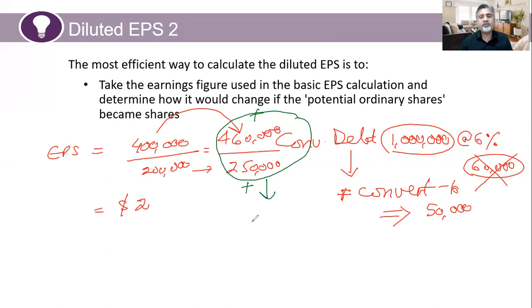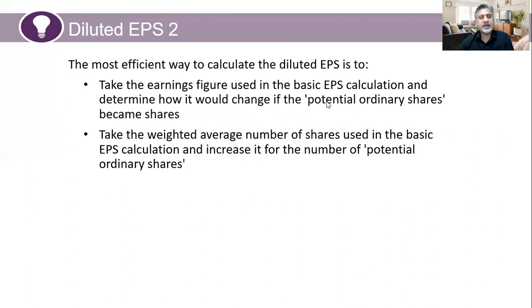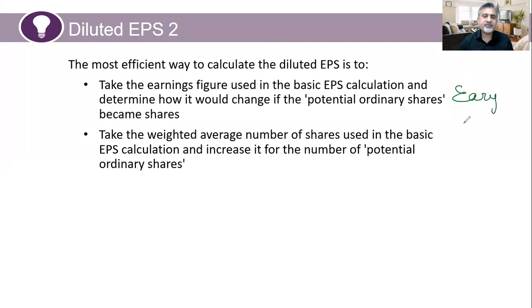Based on this, you calculate diluted EPS. If you divide 460 by 250, that gives approximately $1.84. So first you change your earnings — for example, to $460,000 — then change your number of shares to 250,000, and then divide them. For convertible debt, the adjustment to basic earnings is: basic earnings plus add back loan interest (400 + 60 = 460), and the number of shares becomes the weighted average plus additional shares on conversion.